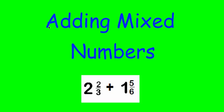In this video we are learning how to add mixed numbers. As a reminder, a mixed number is when you have a whole number with a fraction. Two and two-thirds is a mixed number, one and five-sixths is a mixed number.